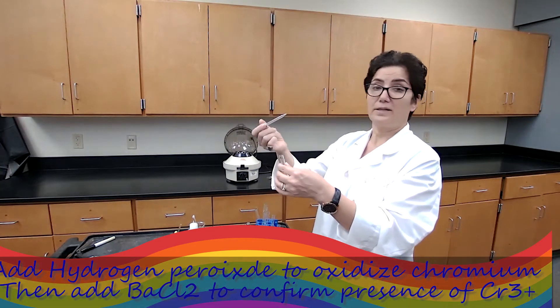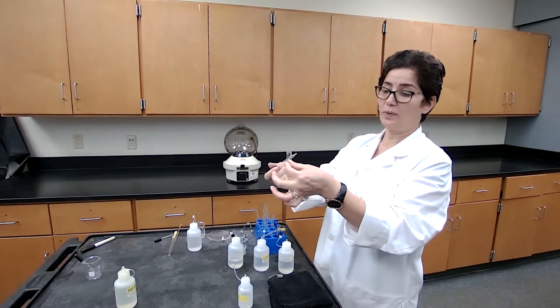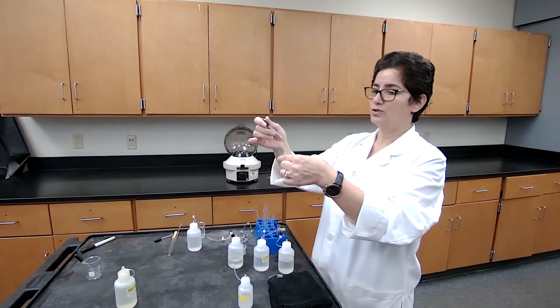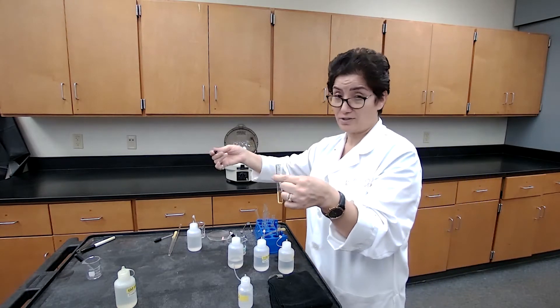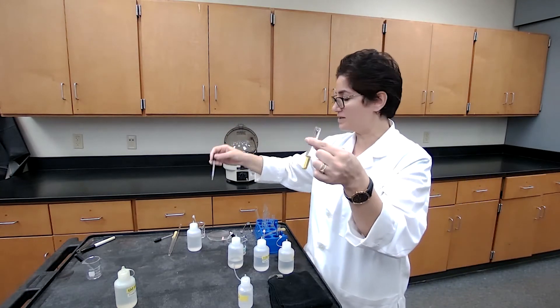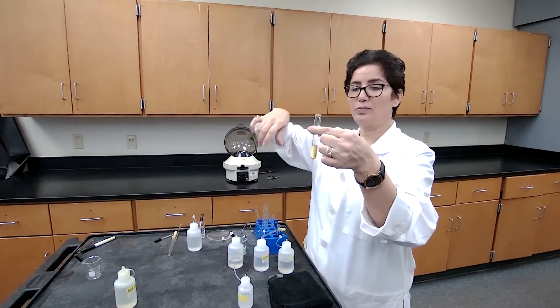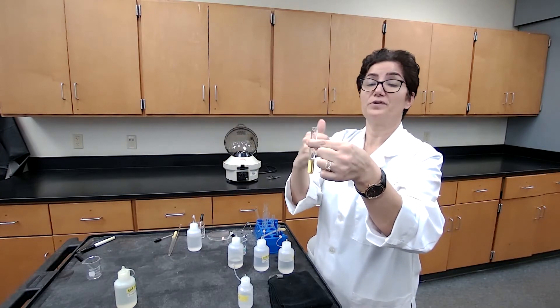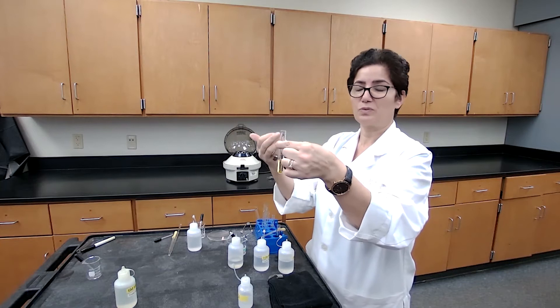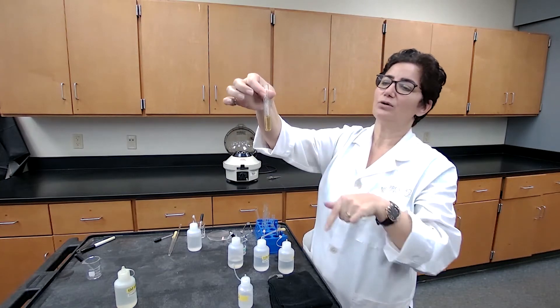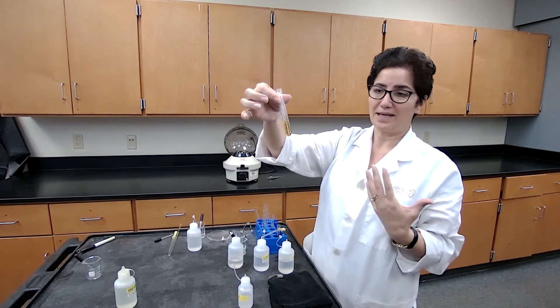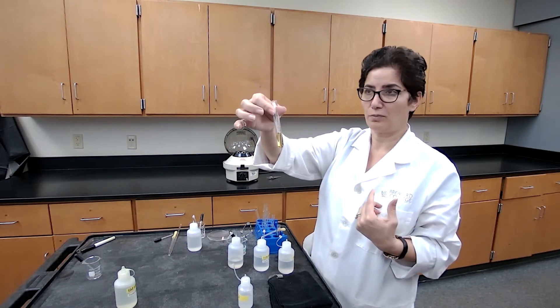I leave test tube A for now and I am going to test for the chromium ion using test tube B. To the supernatant, we are adding two drops of the hydrogen peroxide, 3% hydrogen peroxide. That is going to bring our chromium from 3+ to 6+. That's what we want to have. So it would oxidize the chromium. So this yellow color actually now indicates that we do have chromium.